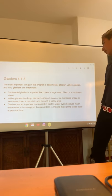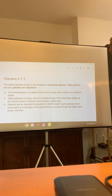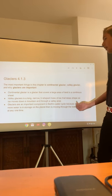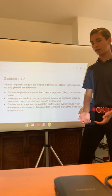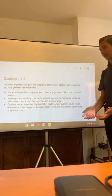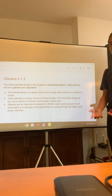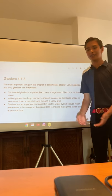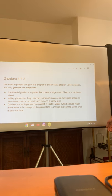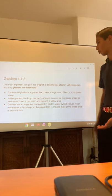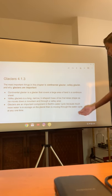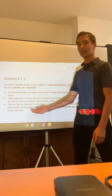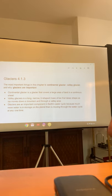Glaciers are an important component in Earth's water cycle because much more water is stored on the planet than is moving through the water cycle at any point in time. If you think about it — like that huge iceberg that hits the ship in the Titanic — that has a lot of water in it, and if you melt every single one of those, that's going to create a lot of water. So glaciers are storing more water than is in the water cycle at any moment.